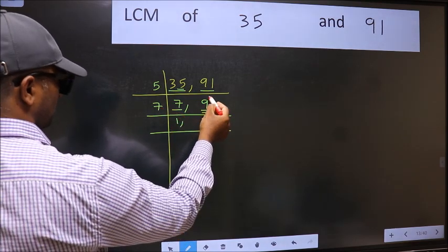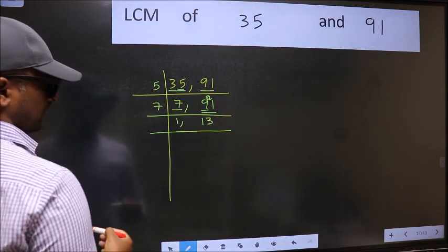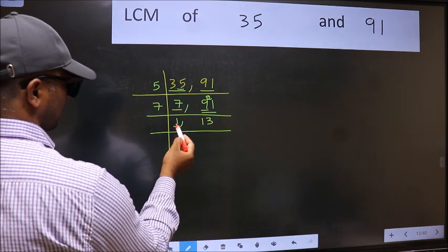9 minus 7 is 2. 2 carried forward gives 21. When do we get 21 in the 7 table? 7 times 3 is 21. Now we got 1 here.